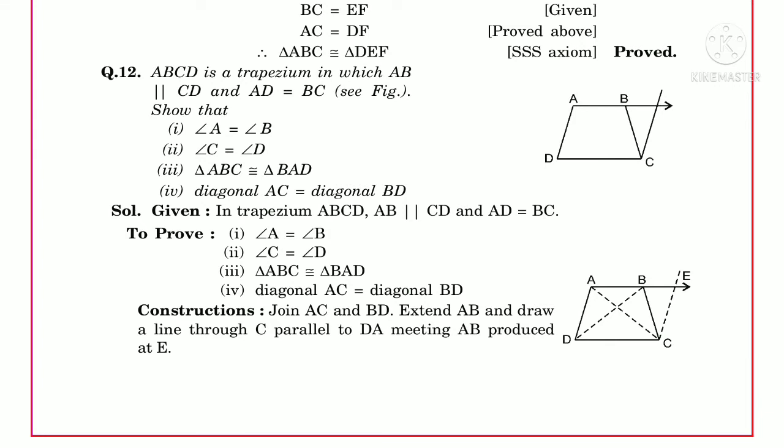Question number 12: ABCD is a trapezium in which AB is parallel to CD. Given that AD equals BC, we need to prove: angle A equals angle B, angle C equals angle D, triangle ABC congruent to triangle BAD, and diagonal AC equals diagonal BD. We need to do a small construction: join AC and BD.